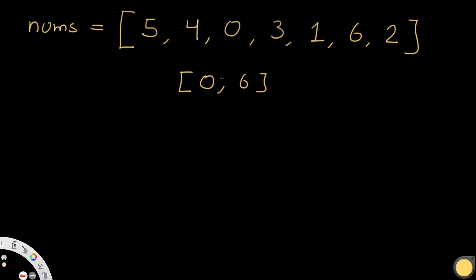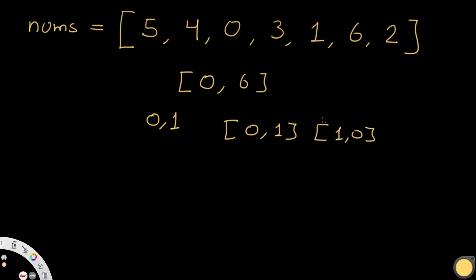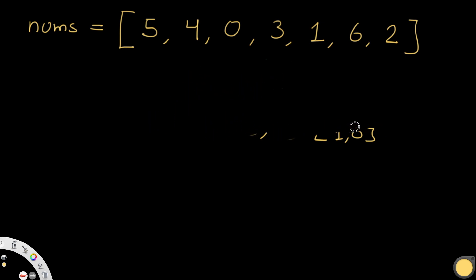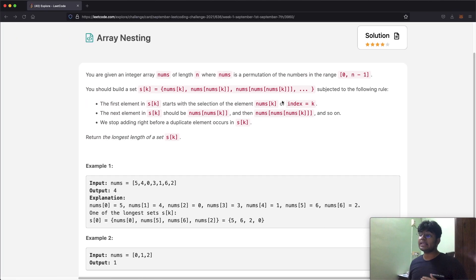We're going to get a random permutation with these values. What that basically means is: if we had the values 0 and 1, one permutation would be 0, 1 and the other would be 1, 0. So if something has a length of 8, you would get one of the permutations with numbers 0 all the way up to 7, because 8 minus 1. That's going to be our input.